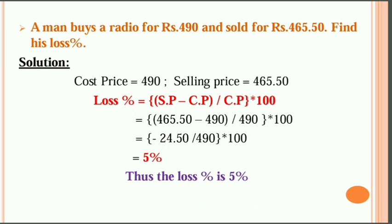We calculate the loss percentage using SP minus CP divided by CP into 100. SP is 465.50, CP is 490. So: 465.50 minus 490, divided by 490, into 100. Solving this gives minus 5%, so the loss percentage is 5%.